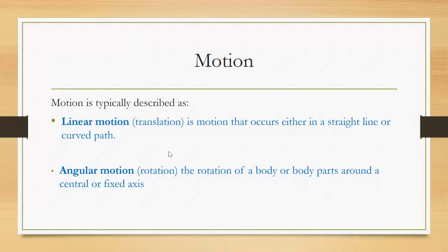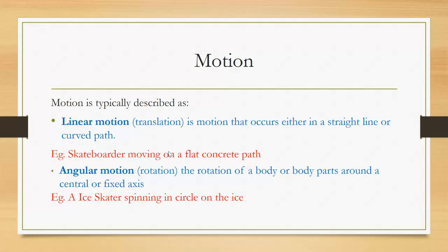Linear motion occurs either in a straight line or on a curved path — any motion where the whole body is moving in the same direction at the same time. Angular motion is the rotation of a body or body parts around a central or fixed point or axis. For example, a skateboarder moving on a flat concrete path — all of their body is moving in the same direction at the same speed. An ice skater spinning in a circle is an example of angular motion.